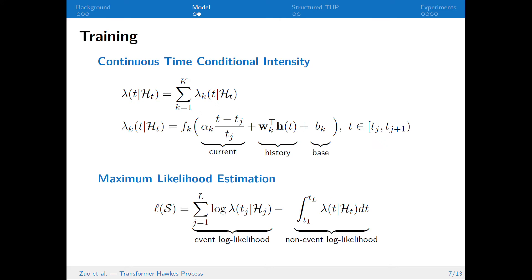To model the occurrence of events, we use a continuous-time conditional intensity function, and we obtain the best set of parameters by maximum likelihood estimation. Here, the non-event log-likelihood can be approximated by Monte Carlo integration.